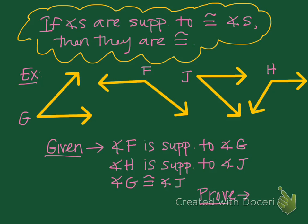The next theorem states that if angles are supplementary to congruent angles, then they are congruent. It says angle F is supplementary to angle G, so those add to 180. Angle H is supplementary to angle J, so those also add to 180. Then, importantly, angle G is congruent to angle J. Therefore, angle F is congruent to angle H — they have to have the same measure because they each add to the same measure to equal 180.